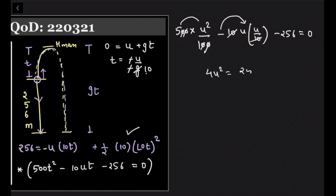So u square is 64, u is equals to 8 meter per second is the answer. Got it everyone, very good.